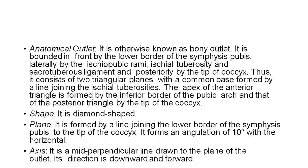It consists of two triangular planes with a common base formed by the line joining the ischial tuberosities. The apex of the anterior triangle is formed by the inferior border of the pubic arch, and that of the posterior triangle by the tip of the coccyx. It is diamond in shape. The plane is formed by a line joining the lower border of the symphysis pubis to the tip of the coccyx, forming an angulation of 10 degrees with the horizontal axis.